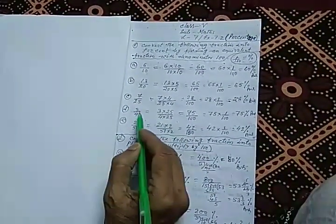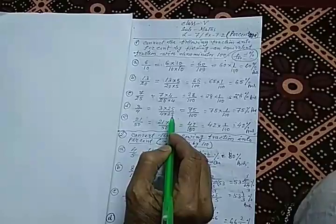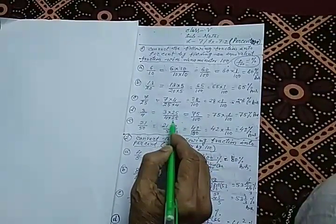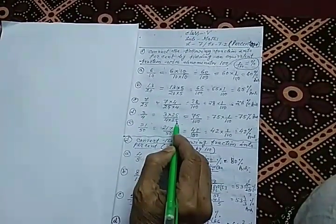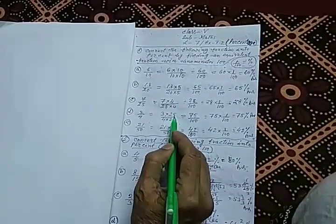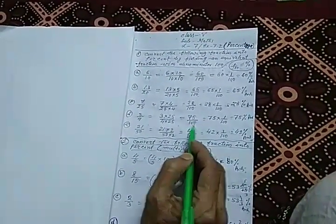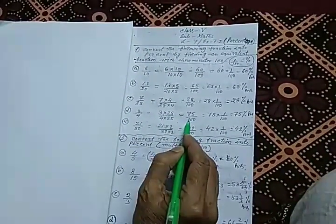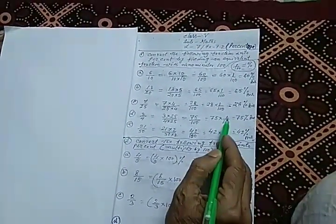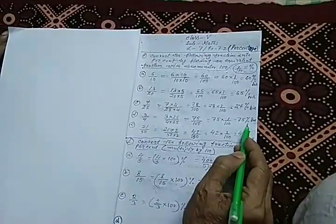In item D, 3 by 4 is the given fraction. We have to make the denominator 100. To do so, we multiply 25 with 4: 4 times 25 equals 100. This 25 must also be multiplied with the numerator: 3 times 25 is 75. So 75 by 100 is the equivalent fraction of 3 by 4. We can write 75 into 1 by 100, and since 1 by 100 equals the percent sign, the answer is 75 percent.